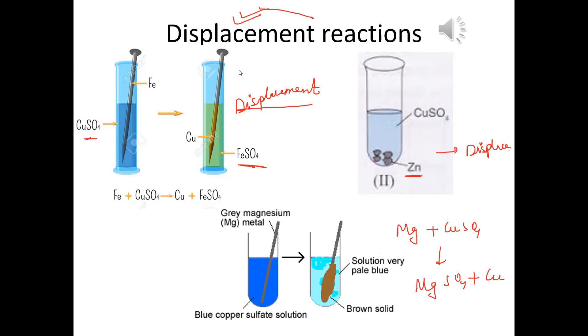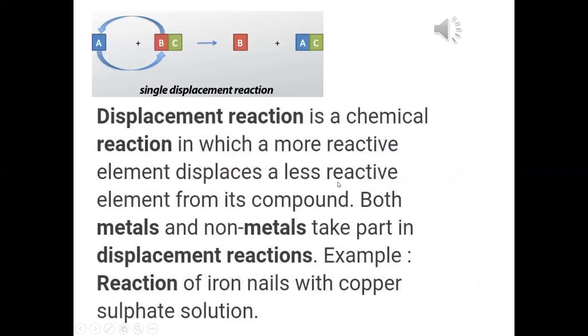This is the third type of chemical reaction where a more reactive element displaces a less reactive element. This can be a metal and metal displaces a metal, non-metal displaces a non-metal or metal may just replace non-metal also. For example, zinc and H2SO4. In general, A plus BC gives B plus AC.